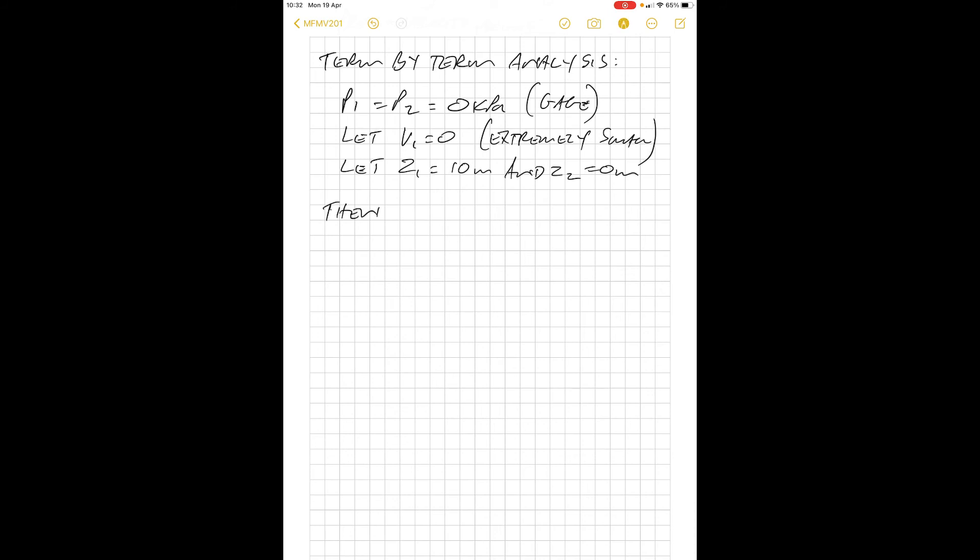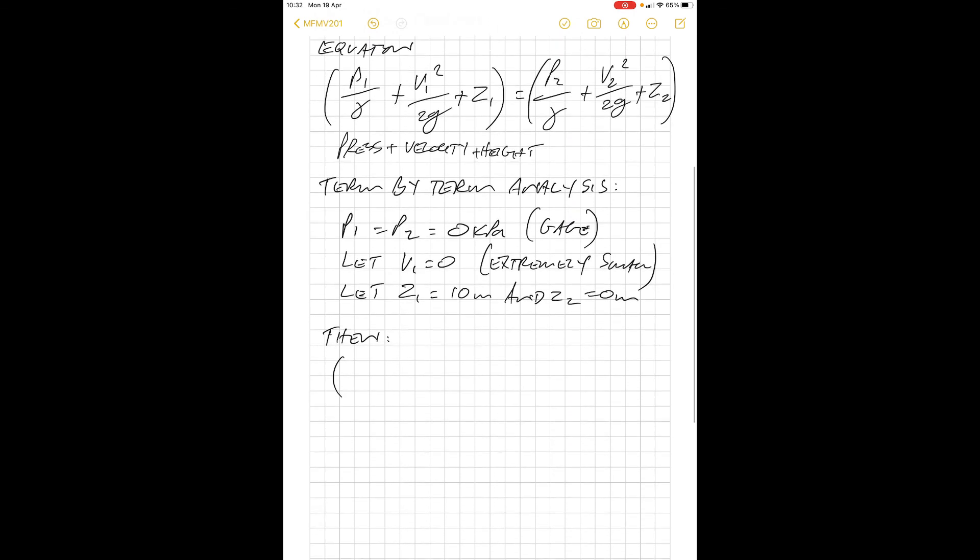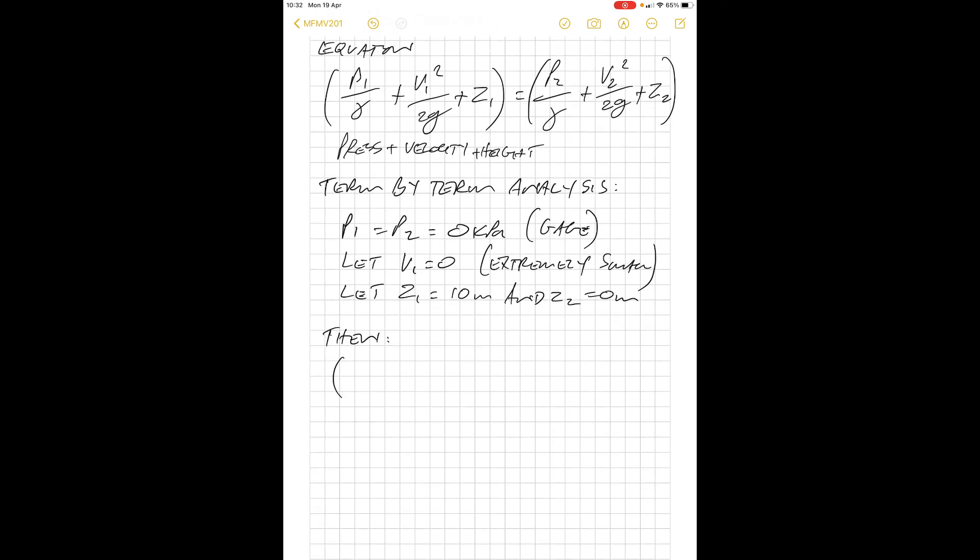We can substitute those into our formula. Looking at position 1, p1 over gamma - p1 is equal to zero, so that's zero. v1 squared over 2g - we said v1 equals zero, so that's zero. Plus z1, and z1 is 10 meters, so we've got 10.